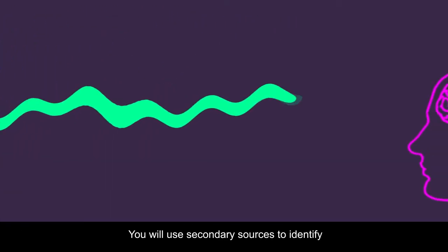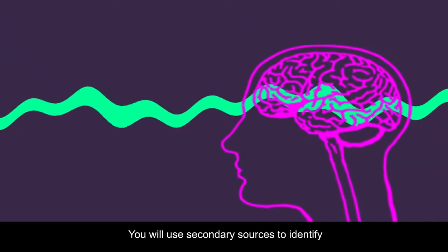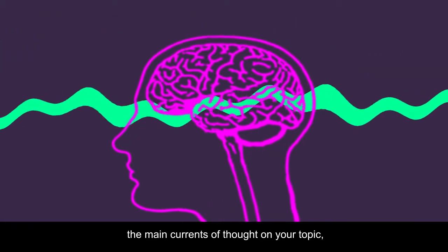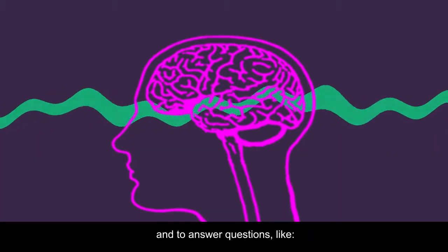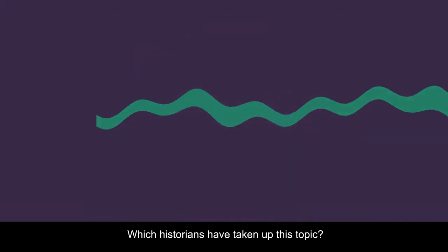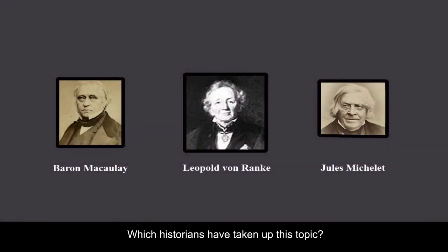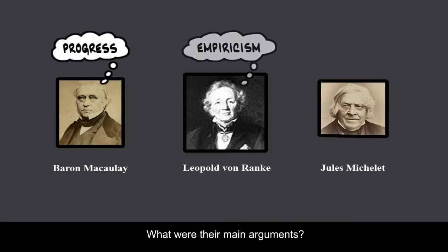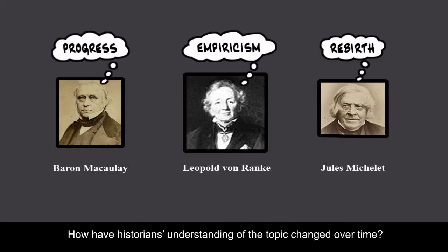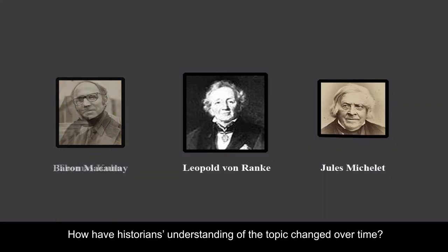You will use secondary sources to identify the main currents of thought on your topic, and to answer questions like: Which historians have taken up this topic? What were their main arguments? How have historians' understanding of the topic changed over time?